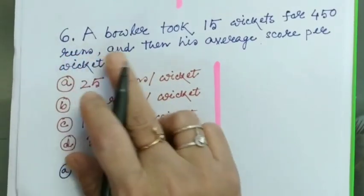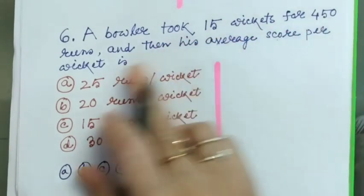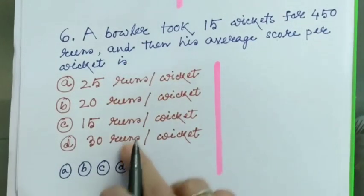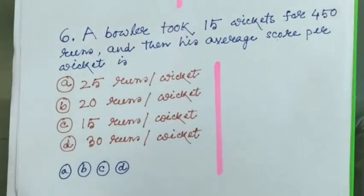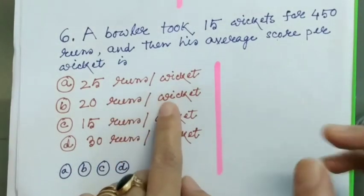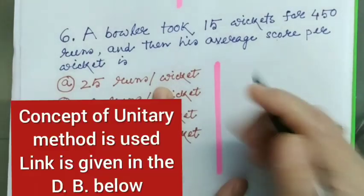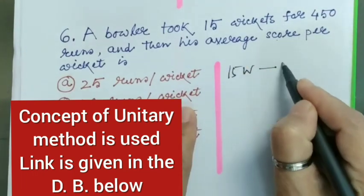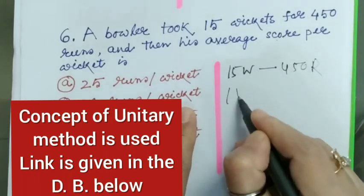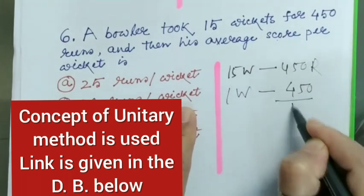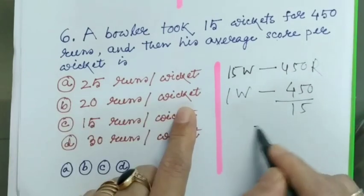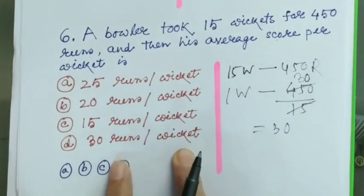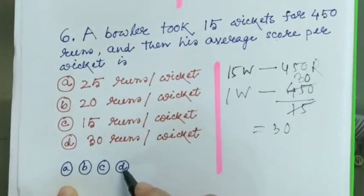Question number six: A bowler took 15 wickets for 450 runs, and then his average score per wicket is? Four options given. Average score per wicket, that means per one wicket is how much? Pretty simple. 15 wickets, so one wicket is 450 divided by 15. This equals 30 runs per wicket. Option D is the answer.